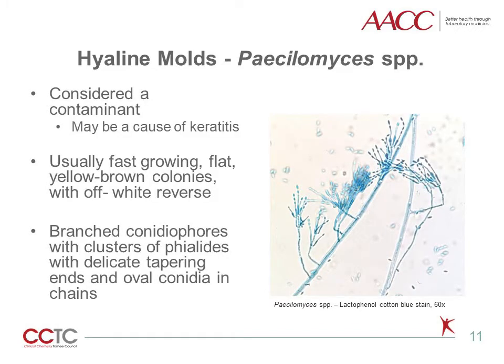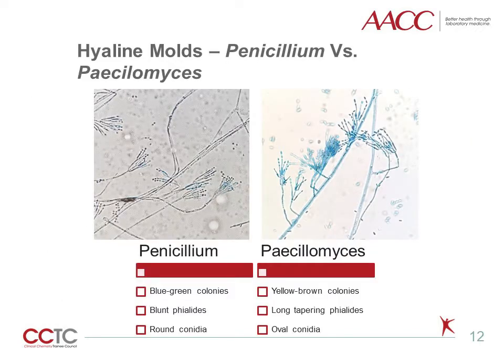Paecilomyces species is considered a contaminant but can also cause keratitis. Paecilomyces species form fast-growing, flat, yellow-brown colonies. Microscopically, they show branched conidiophores with a cluster of phialides with delicate tapering ends and oval conidia in chains. Penicillium and Paecilomyces are very similar microscopically, but Paecilomyces, which is a pathogen, has long tapering phialides and oval conidia compared to the bottle-shaped phialides and round conidia of Penicillium. Colony color is also a key distinguishing feature, since Paecilomyces does not form blue-green colonies.